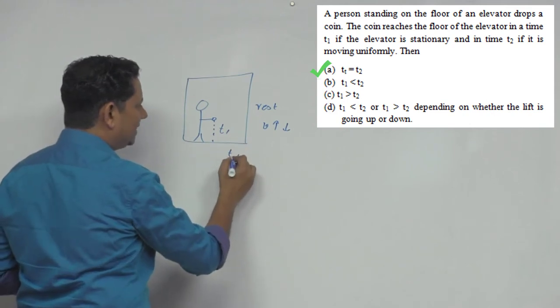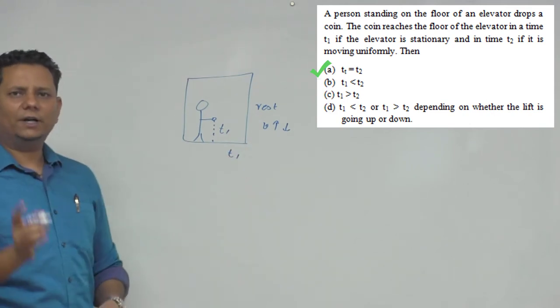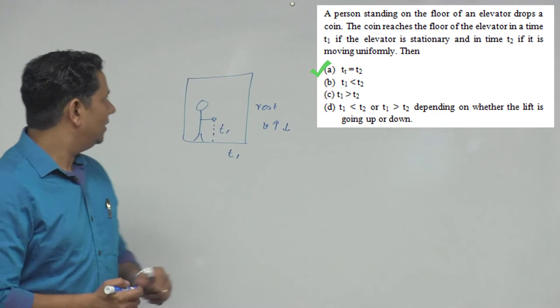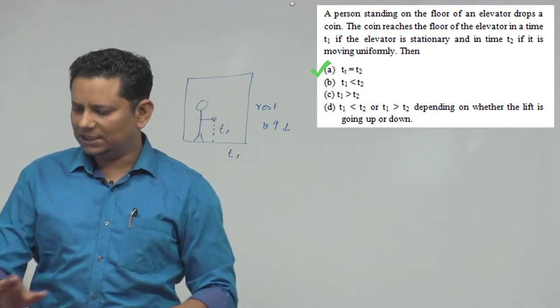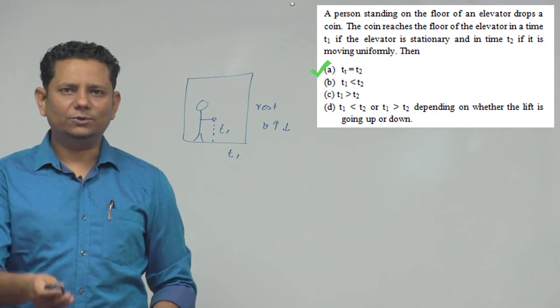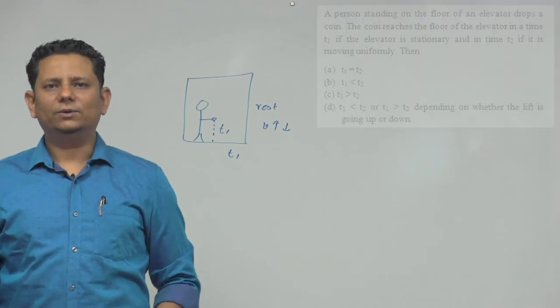the time will be the same T1 because this frame is an inertial frame. If there is acceleration upward or downward, then the time would actually change. So the answer to this particular question would be option A: T1 would be equal to T2.